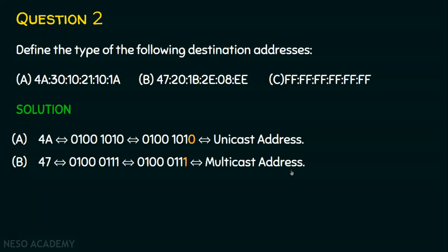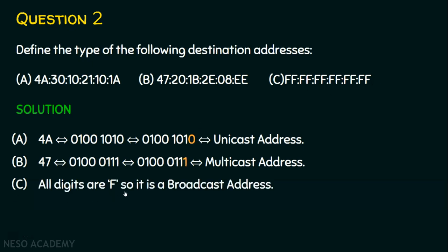Finally, for C: if all the digits in the MAC address are F in hexadecimal — meaning all binary bits are 1 — then it is a broadcast address. All digits are F, so it is a broadcast address. In summary: if the first byte is not FF, just examine the first byte's LSB. If the first byte is FF, check the remaining bytes as well.